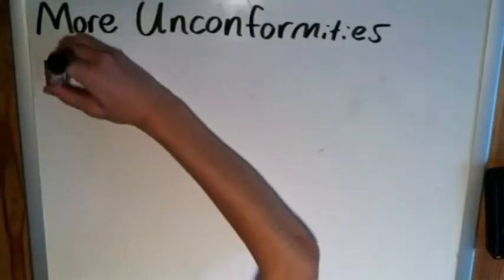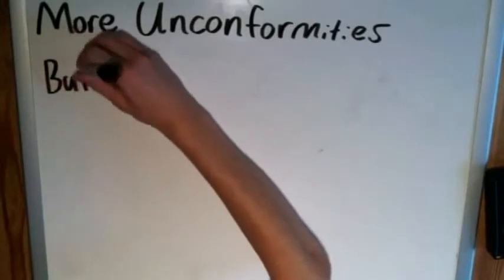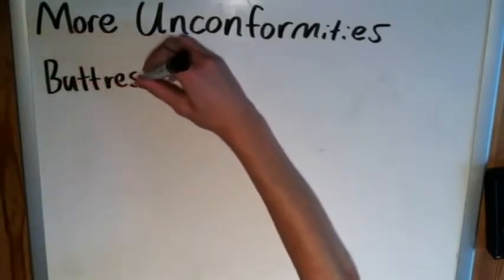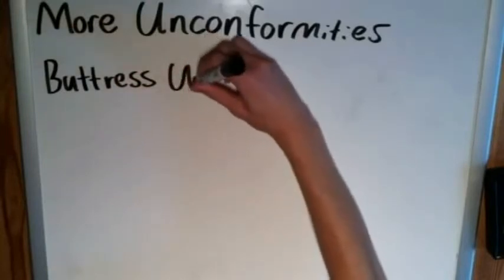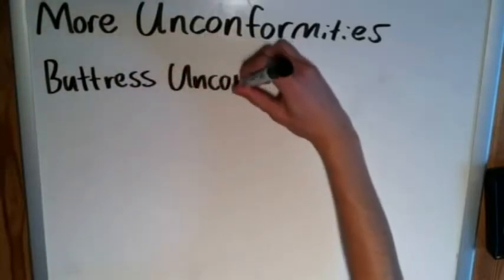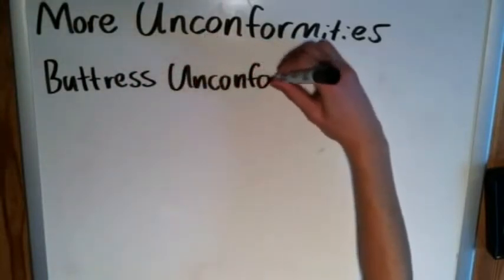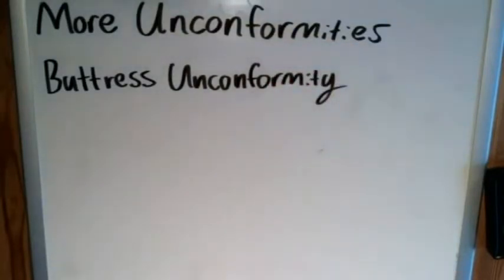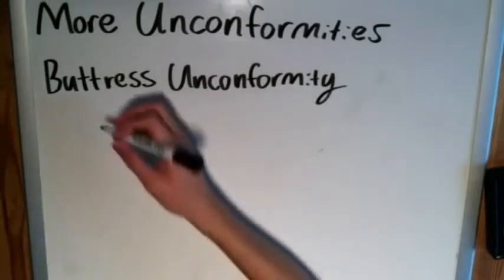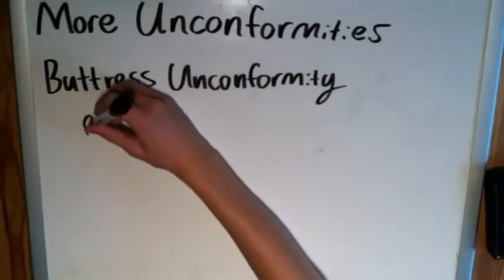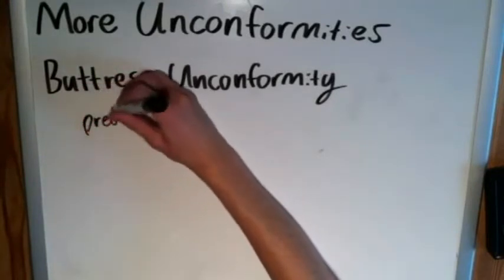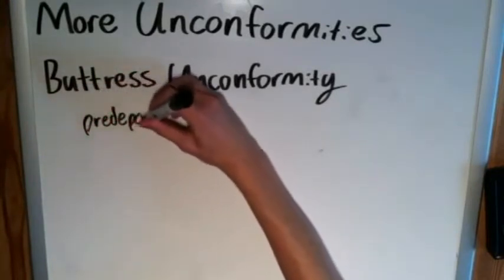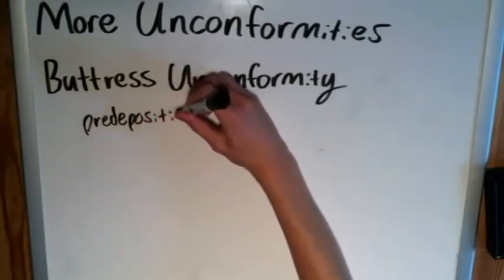Our next type is the buttress unconformity — that's a pretty fun name. In order to have a buttress unconformity, you need what's called predepositional topography.